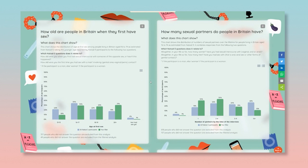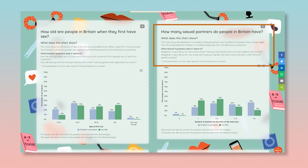Above each chart there is a brief description of the question or questions that the chart is based on. So, for sexual partners it explains that the chart combines responses from two questions: one about the number of opposite sex partners and one about the number of same sex partners.